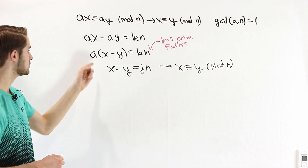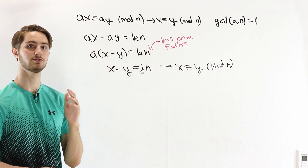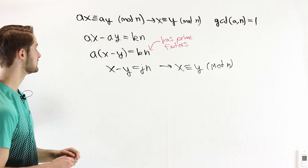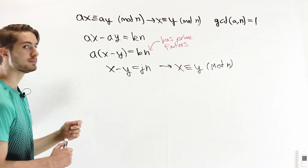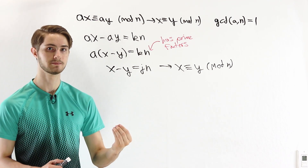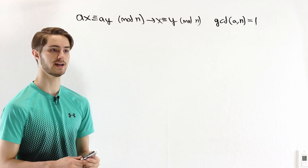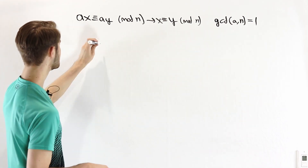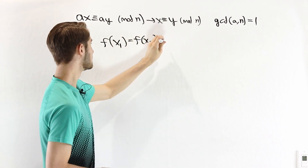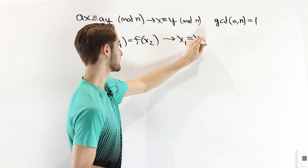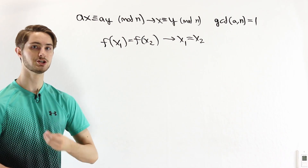The reason this cancellation worked is specifically because a had no prime factors of n, so x − y needed to have all of them. One consequence of this cancellation rule is that if a is relatively prime to n, then multiplying by the constant a is injective — meaning if f(x₁) = f(x₂), then x₁ = x₂.